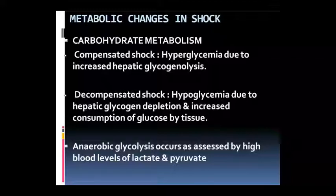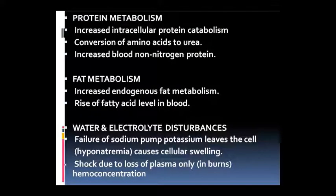Kyunki hepatic glycogenolysis hone lag jaayega jis se ki hyperglycemia ho jaayega - hepatic glycogenolysis matlab liver ka glycogen tutne lag jaayega. Yeh to compensated shock ki mechanism hai. Ab decompensated shock mein hypoglycemia ho jata hai kyunki hepatic glycogen kum ho gaya aur tissue ke dwara glucose poora consume kar liya gaya. Lactate aur pyruvate ikhatte hone lag jaayenge yaani lactic acid, pyruvic acid accumulate hone lag jaayenge. Protein metabolism mein intracellular protein catabolism badh jaayega - amino acids urea mein convert hone lag jaayengi jis se non-protein nitrogen blood ke andar badhenge. Fat metabolism mein endogenous fat metabolism badh jaayega, fatty acid ka level blood mein badh jaayega.